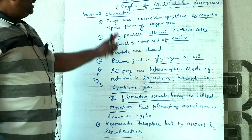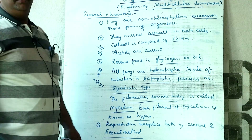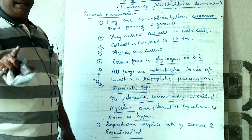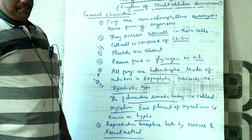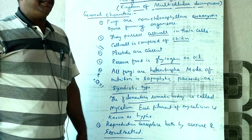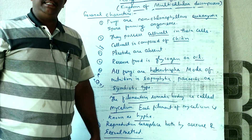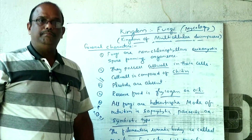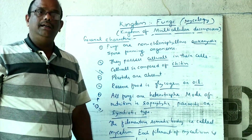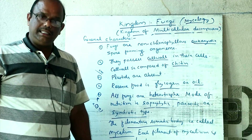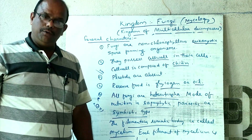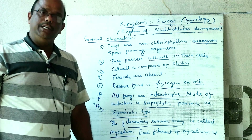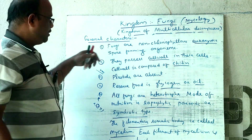Let us discuss the different classes of fungi. Usually fungi are placed in four different classes: Phycomycetes, Ascomycetes, Basidiomycetes, and Deuteromycetes.